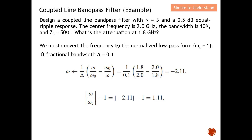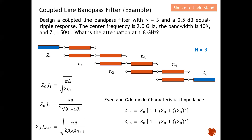Now we are ready to design the coupled-line bandpass filter. Returning to the problem statement: n = 3. If you recall from my previous video, for n = 3 we need n + 1 = 4 coupled-line sections. So you can see here the first, second, third, and fourth sections of coupled lines.